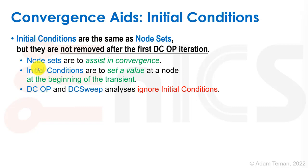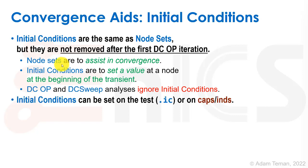DC op and DC sweep analyses ignore initial conditions because they are looking at DC conditions, not an initial condition of a transient analysis. Basically, a transient analysis disregards node sets and an initial condition, and a DC analysis disregards an initial condition. IC to set them in the test.